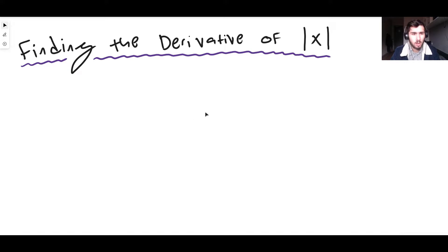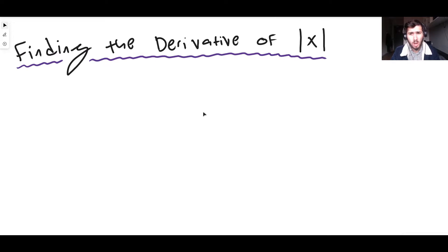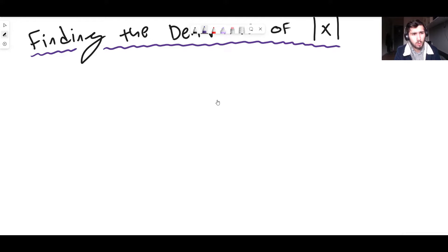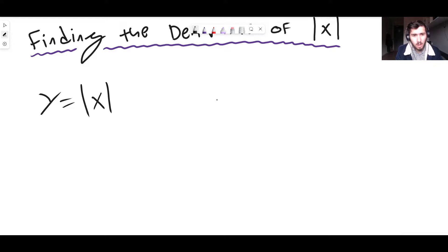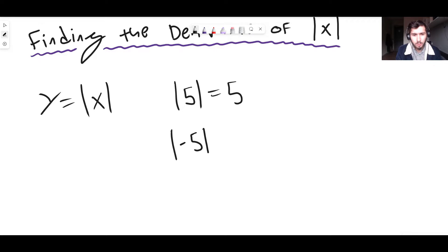We use the notation of an x within two straight lines. That basically means — if you're not familiar with this notation — if you were to graph y equals the modulus function of x, it says: whatever x is, make it the positive version of that number. For example, the modulus of 5 stays as 5, but the modulus of minus 5 becomes positive 5. Likewise, the modulus of minus 1 equals positive 1.